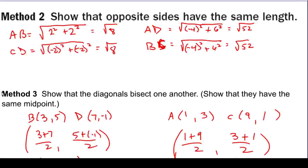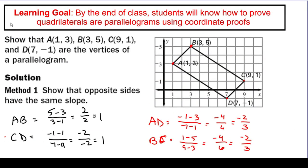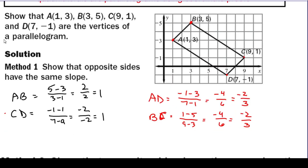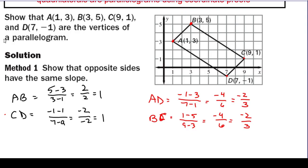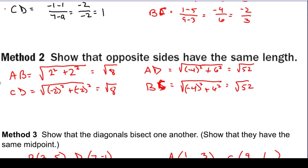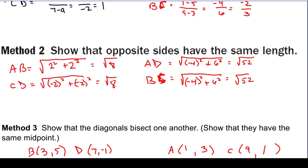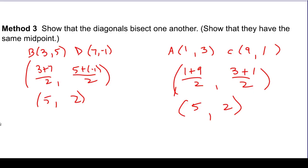These are three different methods that will get you to the same place. You in no way have to do all three. You can pick which one you prefer or look at the information and decide which would be the easiest to use, then choose just one. You can show it's a parallelogram by the definition using slope, by showing opposite sides are congruent using the distance formula, or by showing the diagonals bisect each other using midpoints. Just show any one of these three properties is true using what you know about the coordinate plane, and you have proved the quadrilateral is a parallelogram.